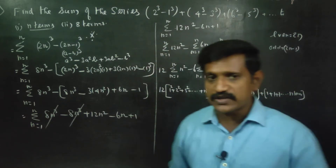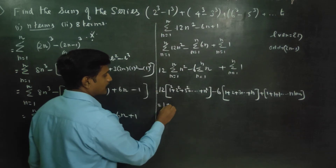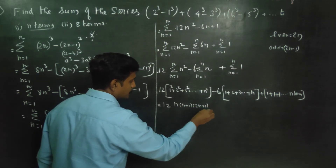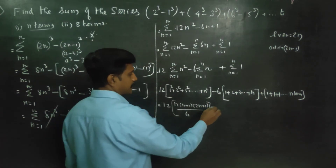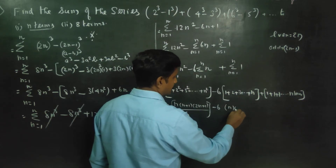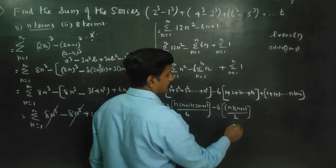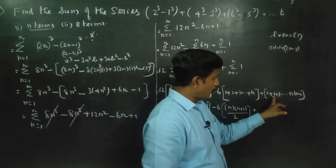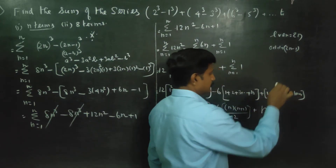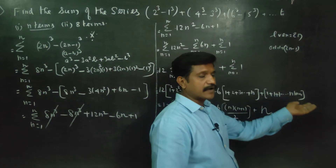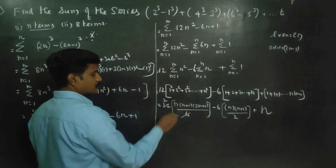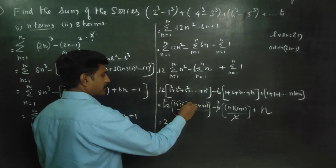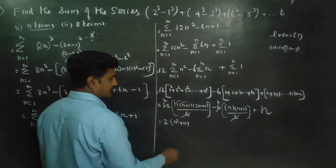The formula for 1 squared plus 2 squared plus 3 squared up to n squared is n into n plus 1 into 2n plus 1, divided by 6. The formula for sigma of n, which is 1 plus 2 plus 3 up to n, is n into n plus 1 divided by 2. And sigma of 1, n times, equals n.